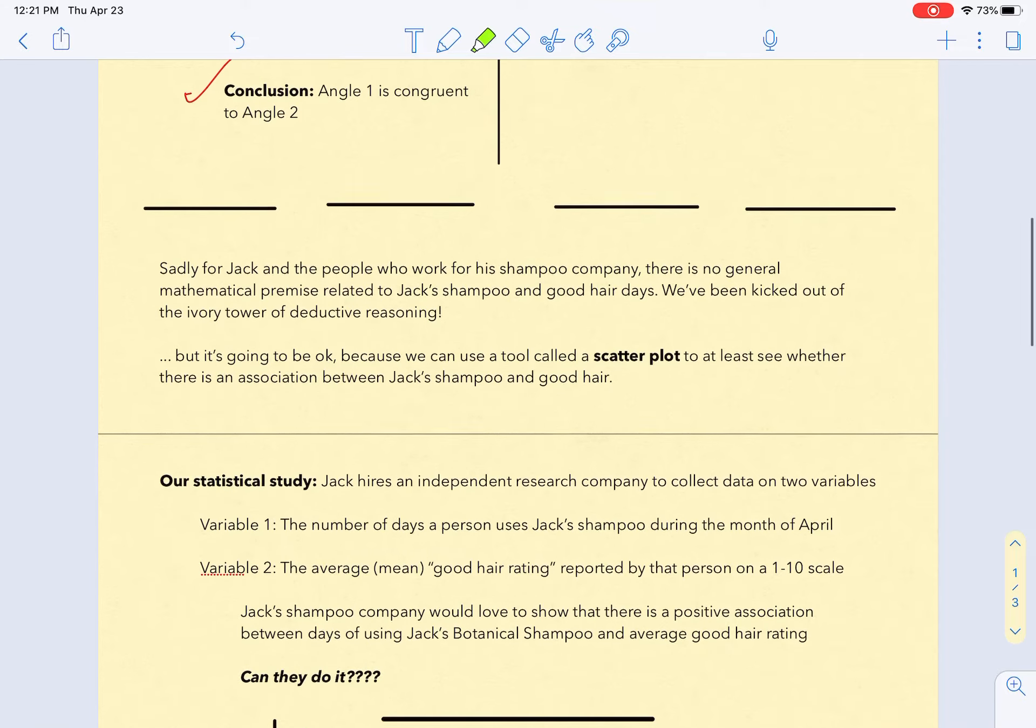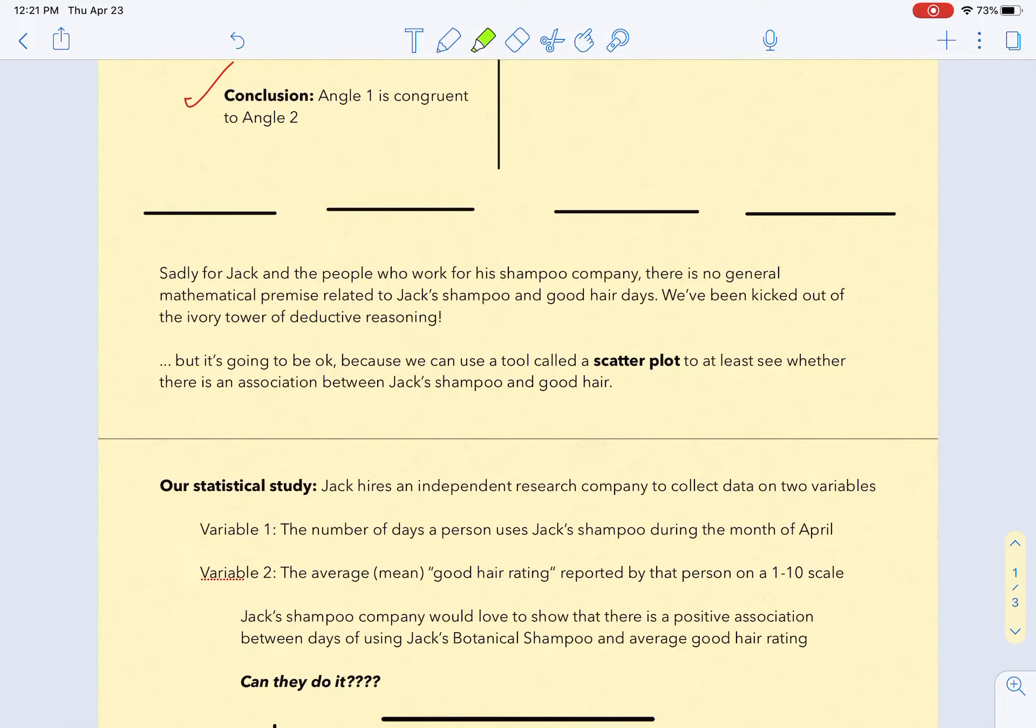We can't see whether Jack's shampoo causes good hair from a scatterplot, but we're going to see if there's an association. We have no general principle, but Jack is going to hire an independent research company to collect data on two variables. Variable 1 is the number of days a person uses Jack's shampoo during the month of April. Variable 2 is the average, or mean, good hair rating - a self-reported measure on a 1 to 10 scale. What Jack's shampoo company is hoping is that there's a positive association between days of using their product and good hair ratings.